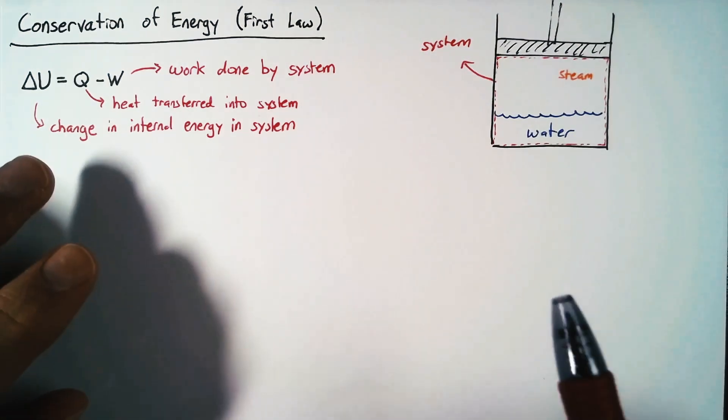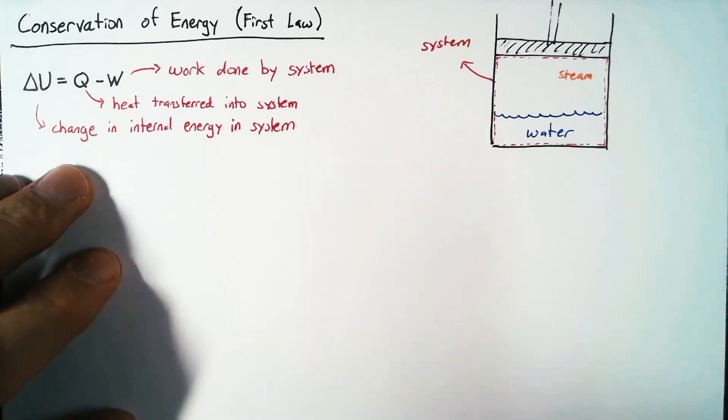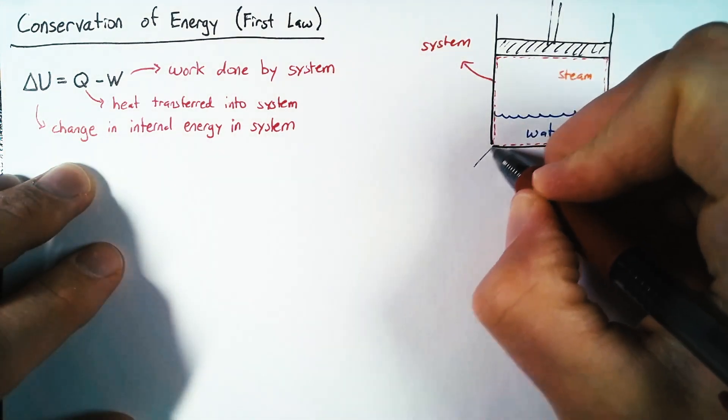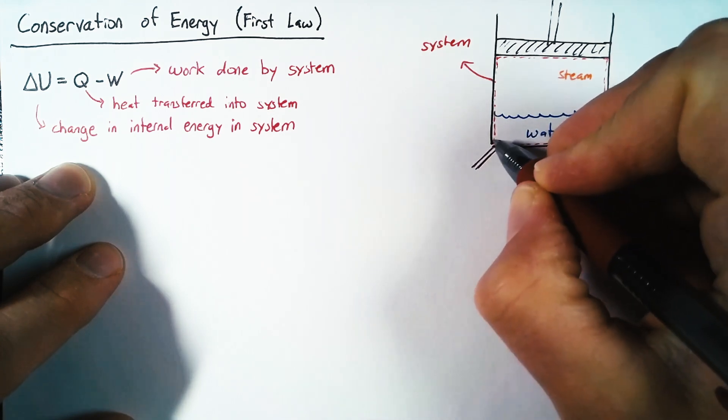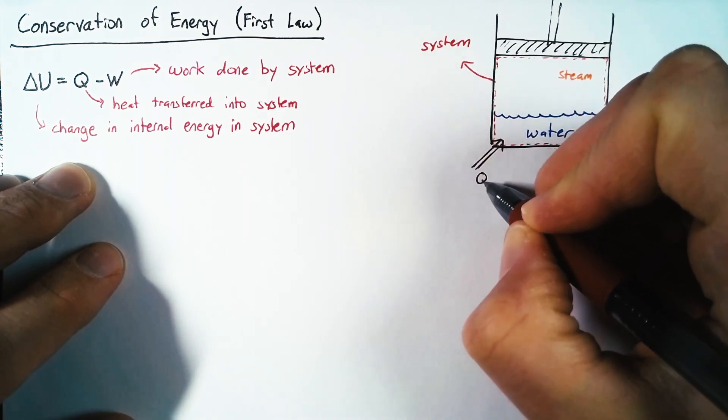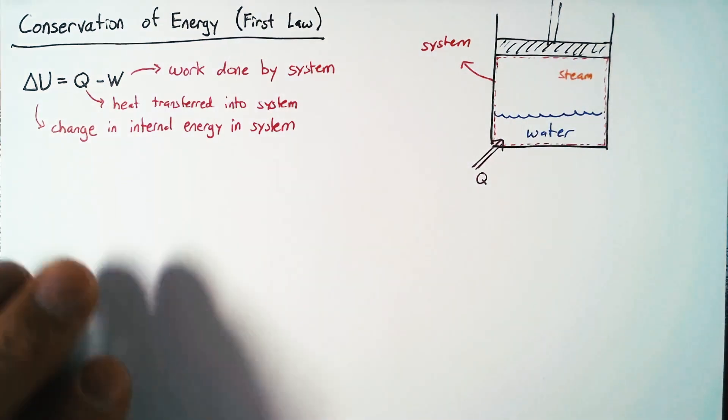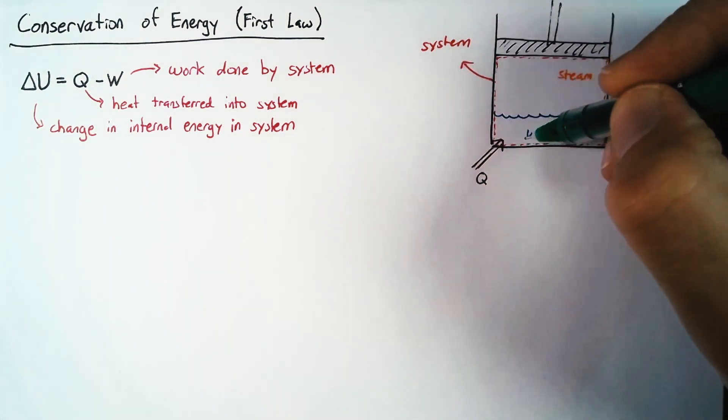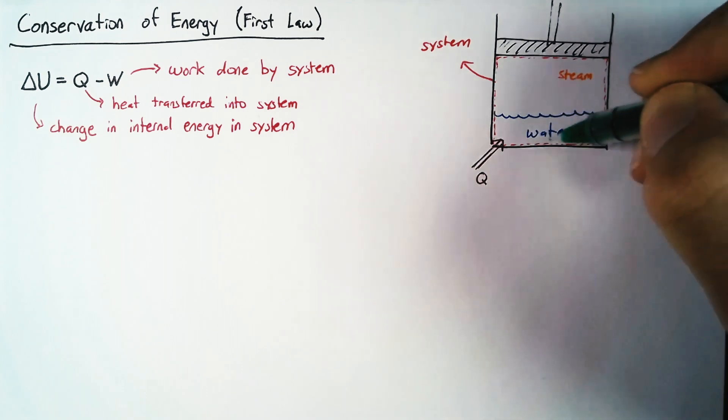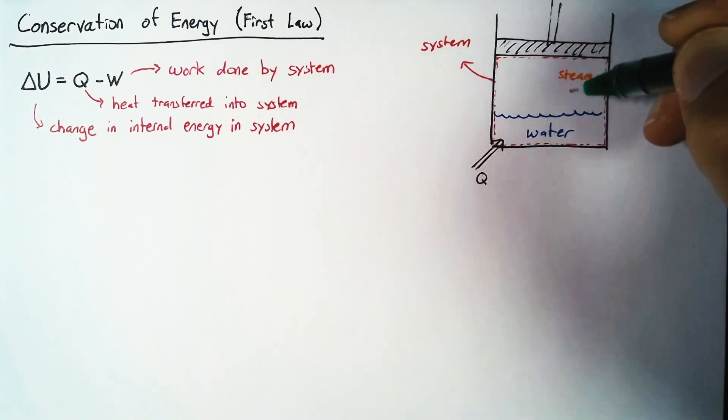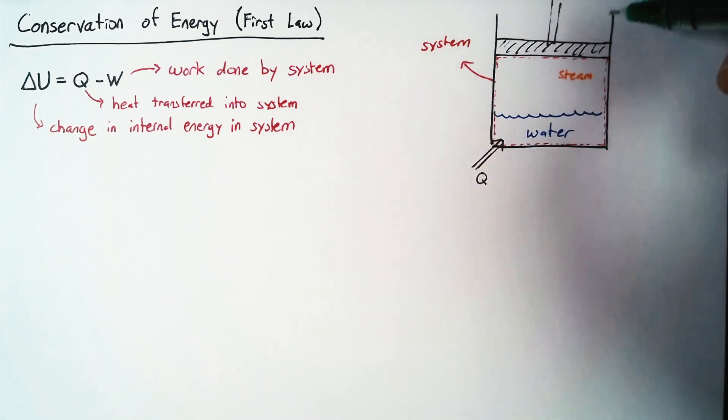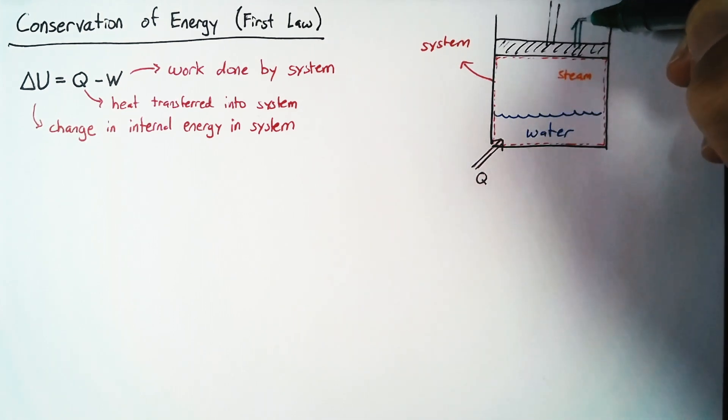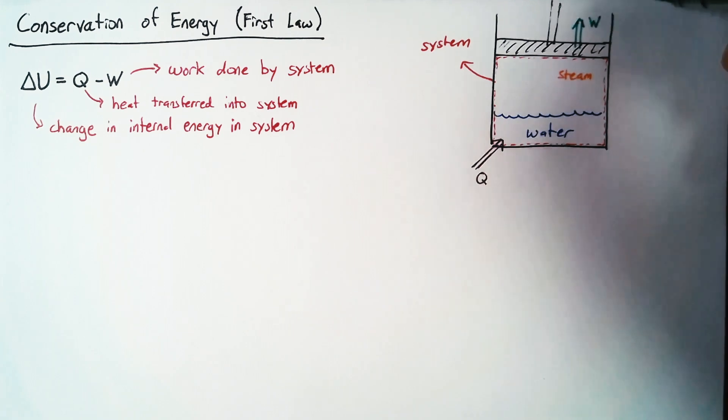Now, what we're going to do with this problem is add some heat to it. And like I said, we're not too interested in the details of how that heat is getting into the system. But we know that in some way it is. And then because we're adding heat, that's going to increase the amount of steam because that water is going to boil. And that will cause our piston to be pushed up. And that piston being pushed up is an example of work.